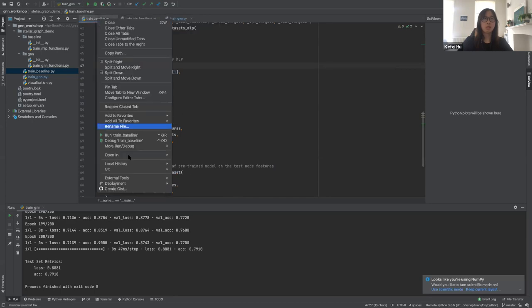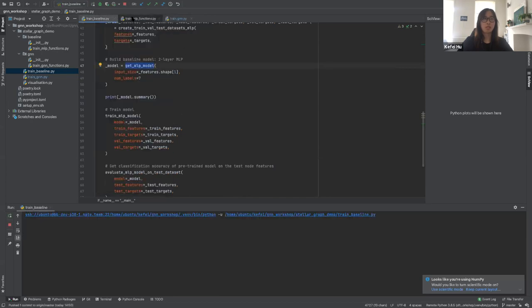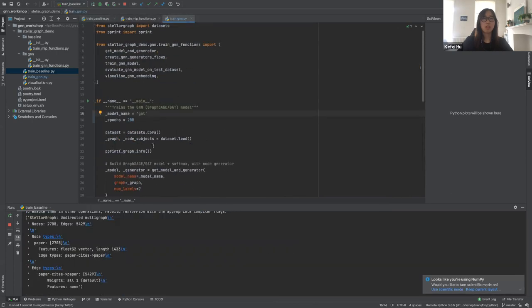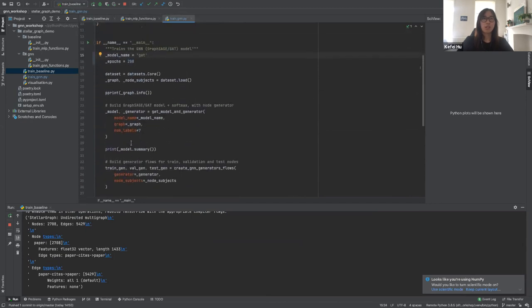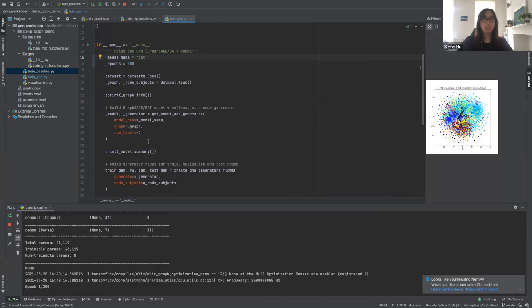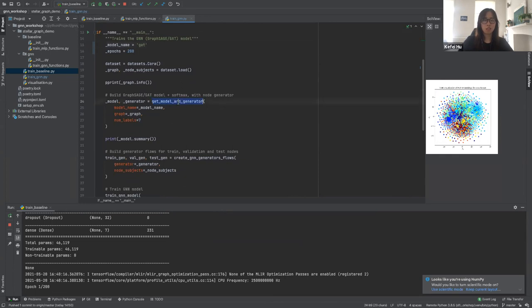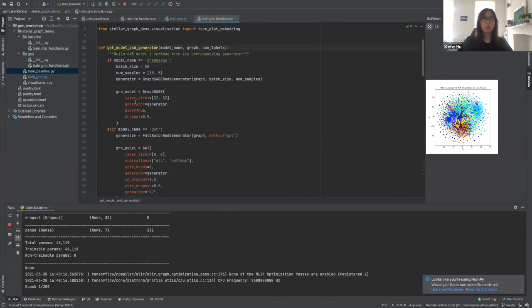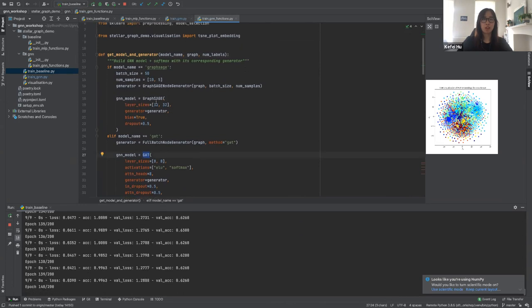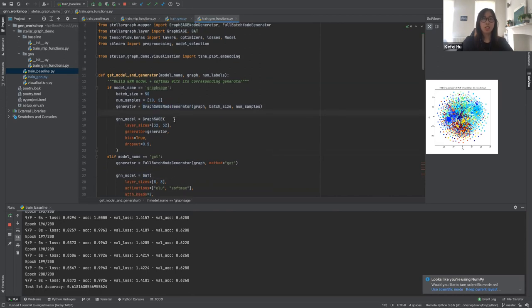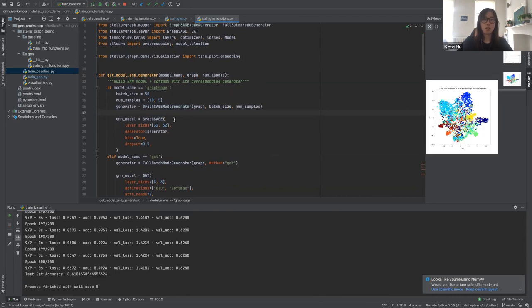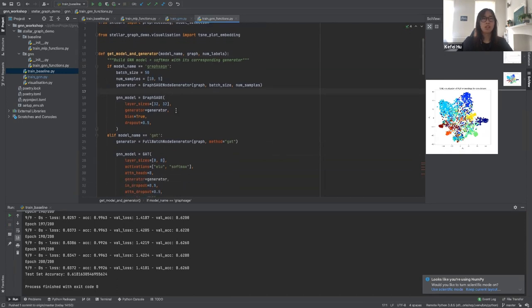Now let's look at the graph training script. Like the baseline script, it has the same structure, except here we build the model using GraphSAGE and GAT imported from Stellar Graph. We also build a generator that generates a batch of nodes and their connections at training time, so we don't have to train on the whole graph at once. Let's look closely at the models. My GraphSAGE model consists of two convolution layers, each producing an output of 32 dimensions. My Graph Attention Networks also consists of two convolution layers, but it uses eight attention heads.